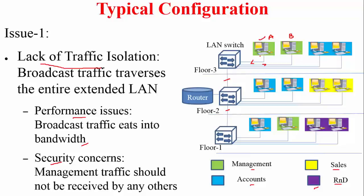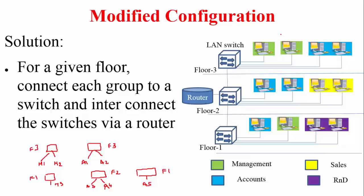One solution is: for each floor, connect each department group to its own switch, then interconnect those switches via a router. For example, on floor 3 management computers M1 and M2 connect to a switch, and the accounts computers on each floor connect to their own switches. These two groups are then connected via a router, which operates at the network layer and provides isolation between them.